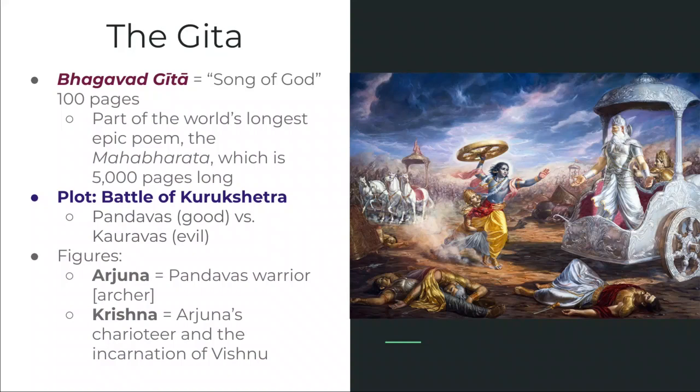Arjuna decides to consult his charioteer named Krishna. Arjuna doesn't realize that Krishna is in fact an incarnation of God, of Vishnu, but as this conversation ensues it starts to become more apparent to him. Arjuna shares his moral dilemma, and all of a sudden time stops on the battlefield. The story in the Bhagavad Gita takes place in this sort of bubble — a frozen period of time — where Arjuna and Krishna can have these intense philosophical discussions to sort out this moral dilemma, and then the ensuing results will follow: whether or not Arjuna should fight in this battle.